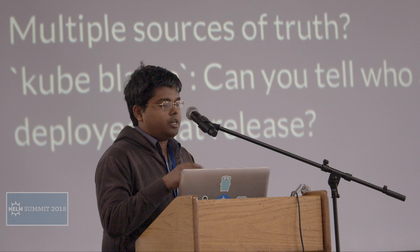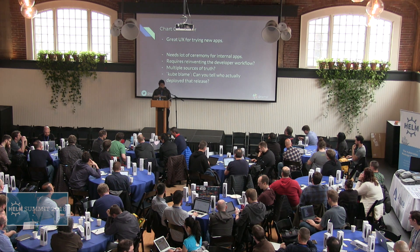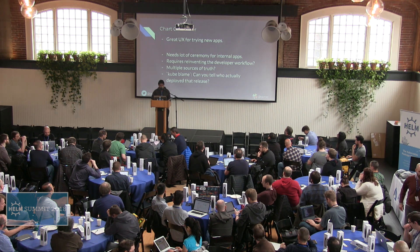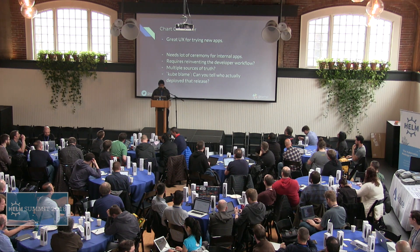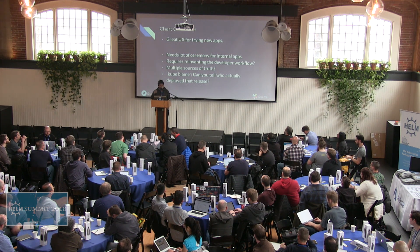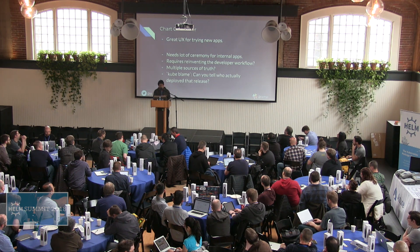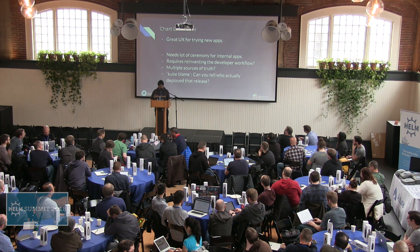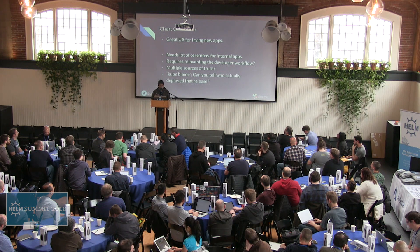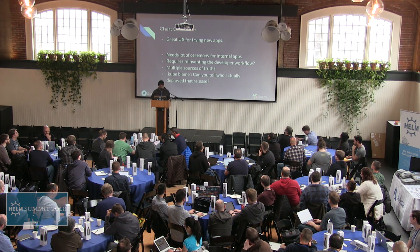Helm is great if you want to try somebody else's application — you have a new cluster, just do helm install and you have something running. But if you're trying to use it for internal applications, you have to do a lot of things. Maybe you have a deployment and a service file, but now you have to create a values file. It's a whole new different tool set. From yesterday's talks, it became clear that you effectively have to reinvent the whole developer workflow — now you have to build charts, push charts. You also have multiple sources of truth: it's not enough to look at your Git repo, you also have to see who actually released stuff from the Helm releases. You can do a Helm rollback and make changes to the cluster directly. Because Tiller doesn't have authentication, you don't really know who pushed that change — if it's multiple people across different time zones, it's actually a real problem.